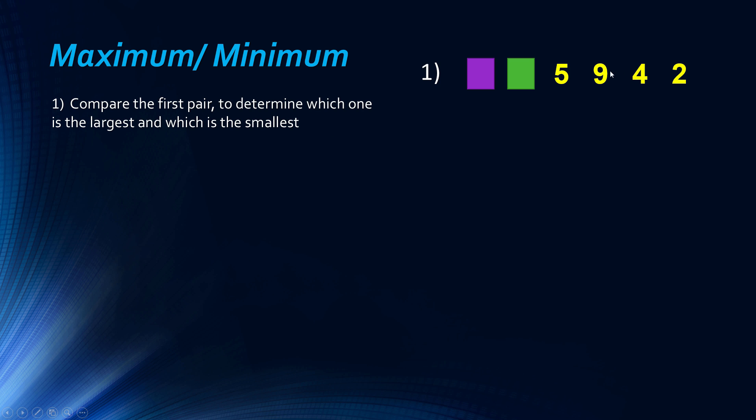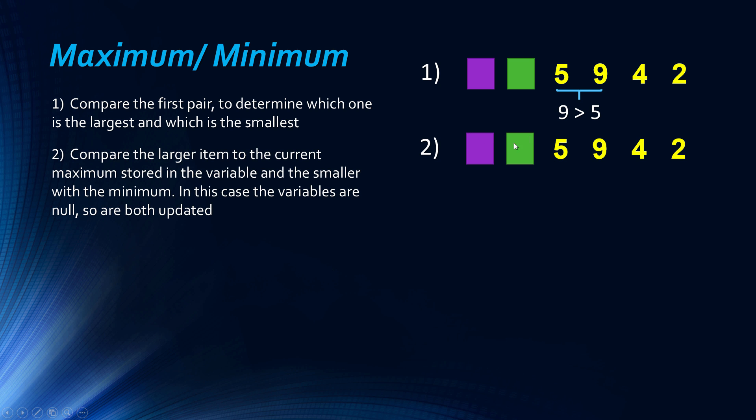And so what we're doing, we're going to, first of all, compare the first two values in our list. So five and nine, which one's bigger? So nine's bigger than five. And so we're going to, essentially, we've got to be quite precise here. We've got to compare it with our current values in our variables, and nothing's in our variables at the moment, so they're just updated. So this purple one is representing the minimum value, and this is our current maximum value.